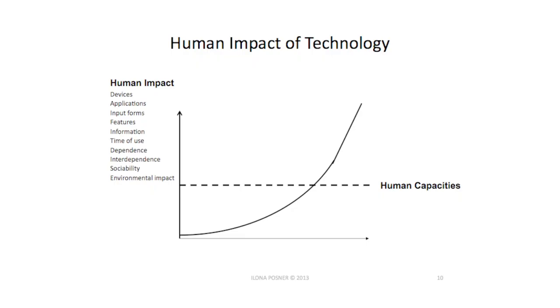We have human impact, devices, applications, inputs, features, time of use, dependence and interdependence, the sociability and the environmental impact — everything is increasing with that exponential curve. And on the other horizontal line, we have the human capabilities.